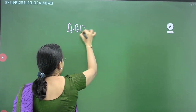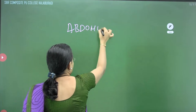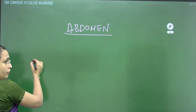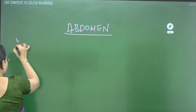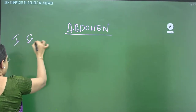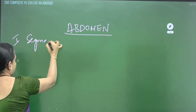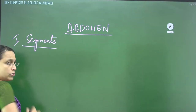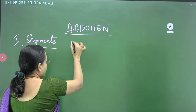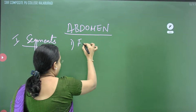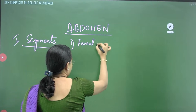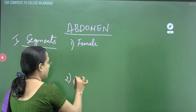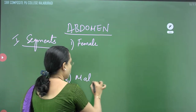Let me explain the abdomen of cockroach. The first point I will cover is the segments of the abdomen of cockroach. In that, the first point will be female segments and the second will be the segments in the male cockroach.